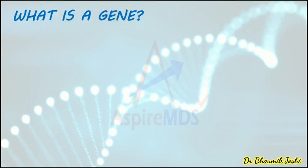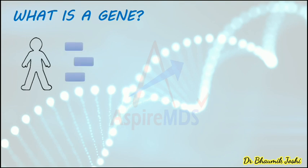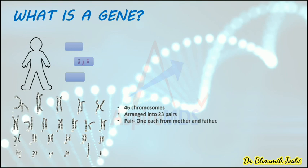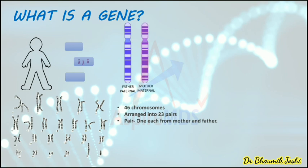What is a gene? Our human body is made up of millions of cells and in the nucleus of these cells there are chromosomes. A human cell has a total of 46 chromosomes, present in pairs — so we have 23 pairs. In each pair, one chromosome we have got from the father (the paternal chromosome) and one from the mother (the maternal chromosome).